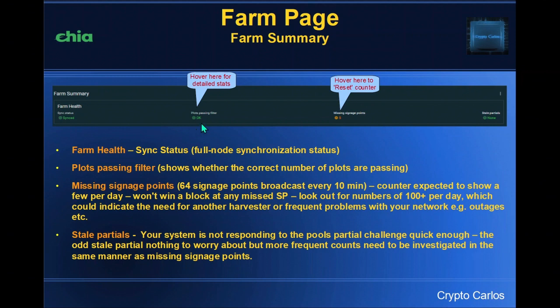Then there's 'plots passing filter' — this shows whether the correct number of plots are passing the filter according to the size of your farm. You can hover over this for detailed stats showing the total number of plots passing filter and the expected number. Those two figures should be very close together to indicate your farm is working properly. If you see differences, it will probably be highlighted by a change to the status under this section.